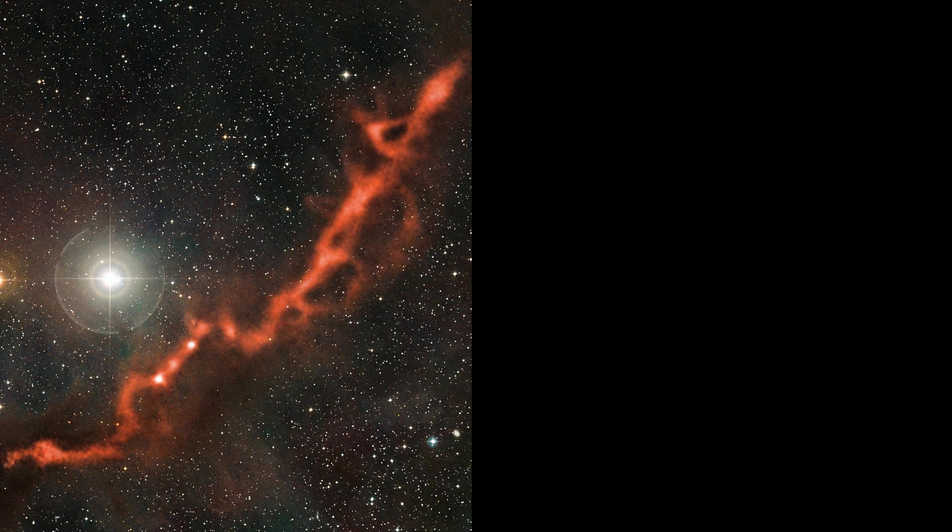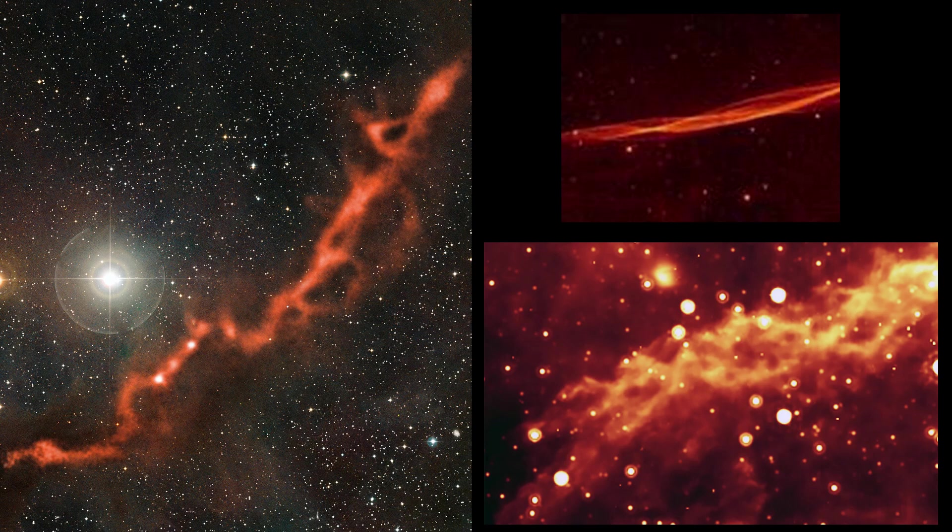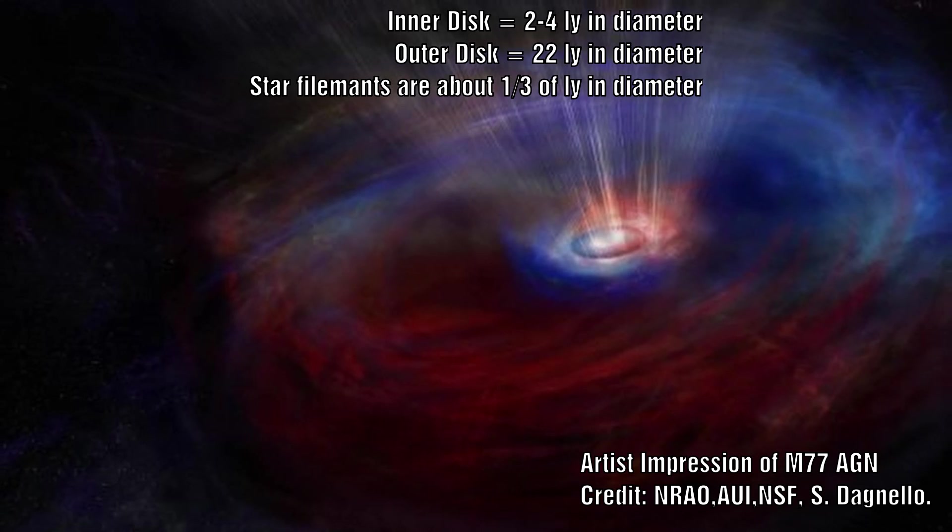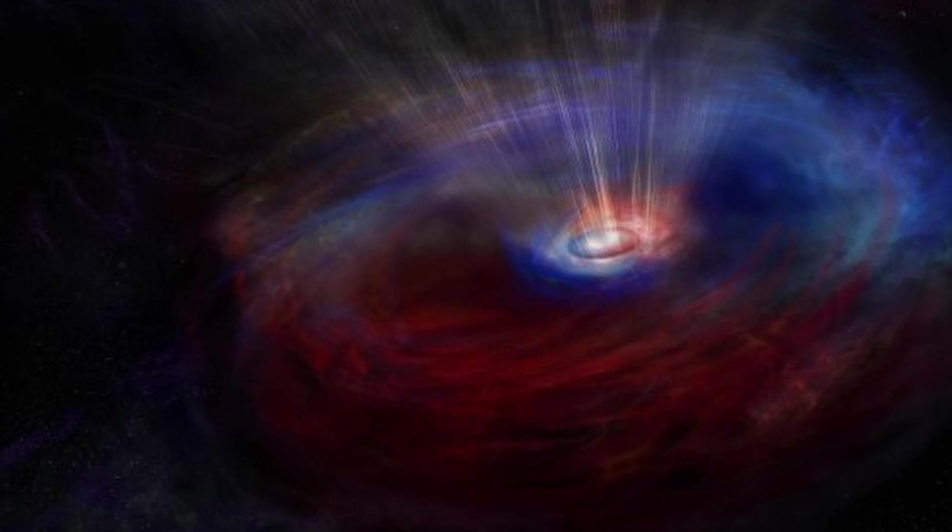We don't see these counter-rotating shells further out, so could this give us some indication of the size of these filaments? The inner disk is two to four light-years across, and the outer one spans 22 light-years. So is that our size for these intergalactic Birkeland currents?